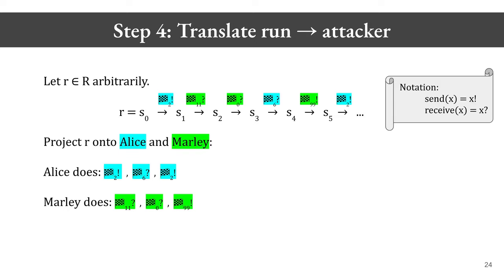The next step is that we project the run onto Alice and Marley. Events in the interface of Alice are colored blue and events in the interface of Marley are colored green. An event could be in interfaces of both, and we handle that in a natural way. A natural objection would be: what if this run is infinitely long? The answer is that an LTL model checker gives us back omega-regular runs, which means they are of the form A followed by B, B, B, B forever, where A is some string and B is some string. You only need to know A and B in order to know everything — that's the magic of using linear temporal logic for model checking.